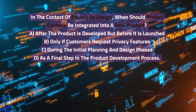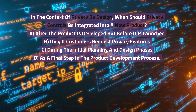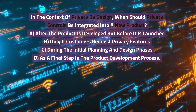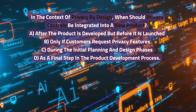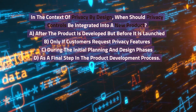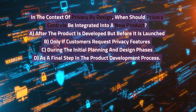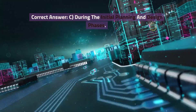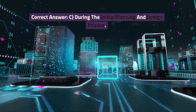In the context of privacy by design, when should privacy controls be integrated into a new product? A. After the product is developed but before it is launched. B. Only if customers request privacy features. C. During the initial planning and design phases. D. As a final step in the product development process. Correct answer: C. During the initial planning and design phases.